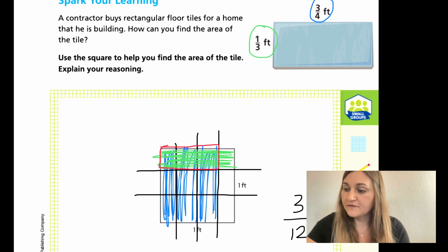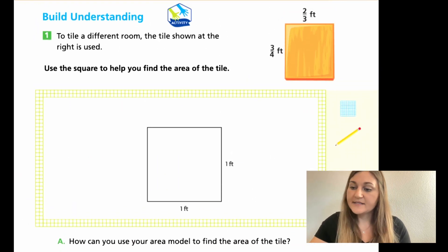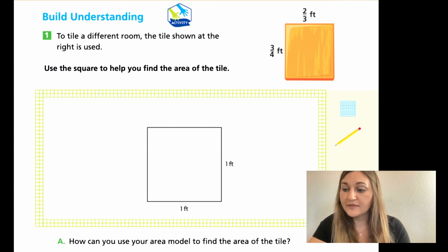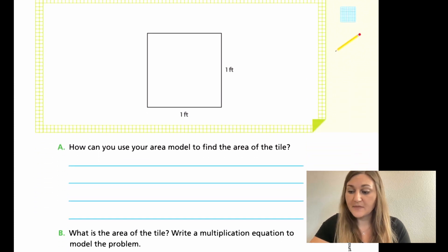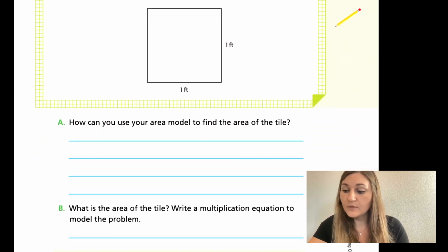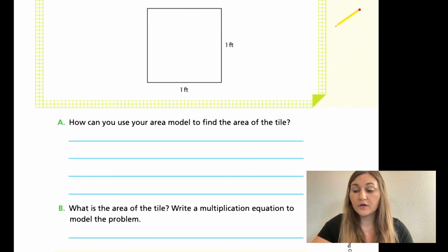Let's flip the page to 200. To tile a different room, the tile shown at the right is used. Now we have 2 thirds by 3 fourths of a foot, and we're going to do the same thing drawing with a 1 by 1. We have two questions, A and B. A says how can you use your area model to find the area of the tile? And B, what is the area of the tile? Write a multiplication equation to model the problem. Go ahead and try these problems and then come back so we can work on it together. Hit pause here.